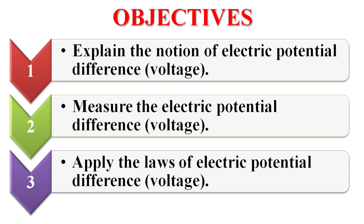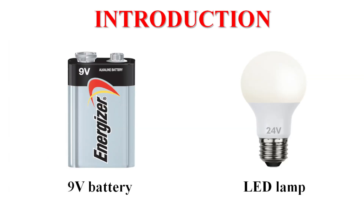Let's take the other name, or new name, which is Potential Difference. The first objective is: what is meant by Potential Difference? As you can see here, we have a 9V battery and an LED lamp. Written on it: 24V and 9V — a number and a unit. This unit is Volt. So the unit of Voltage or Potential Difference is Volt.